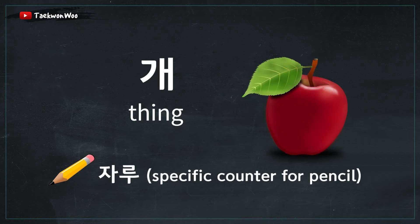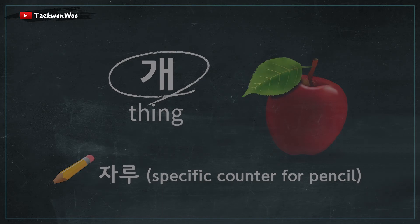However, when you are not sure which counter to use for inanimate objects, you can simply use this one. Alright, now let's count from 1 to 10 with this counter. Repeat after me.